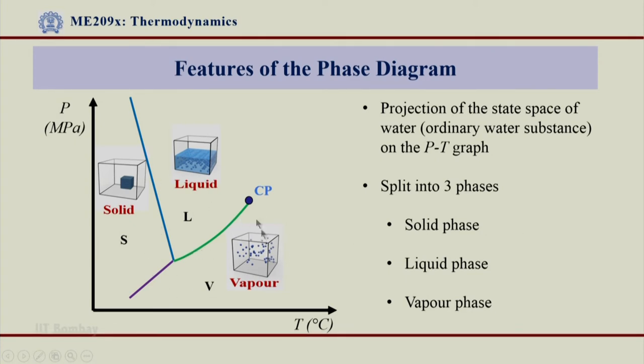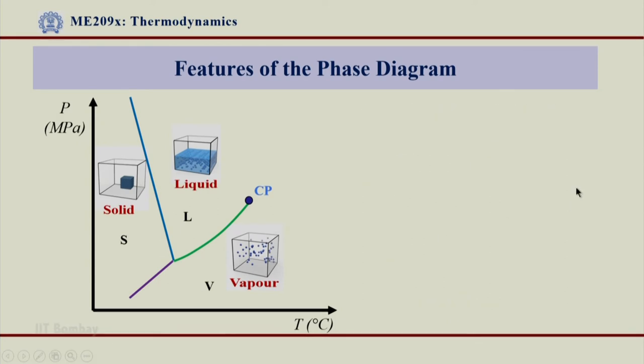Now, we can notice various features from these phase diagrams. What are these features? What you see here is a green line which is what we call as liquid vapor saturation line because you encounter this line while having a phase transformation from liquid to vapor.